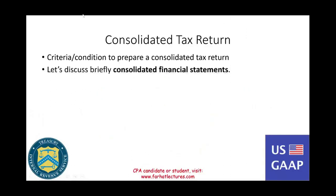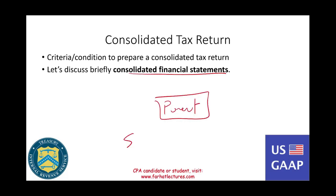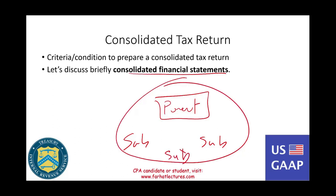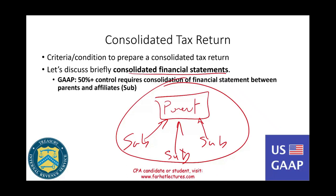Before we discuss this, we have to go back and discuss when do we consolidate financial statements. What does a consolidated financial statement mean? Same concept — you have a parent company and you have subsidiaries, and they all file the same financial statements, consolidated with the parent company. GAAP requires that this happens when you have more than 50% control.